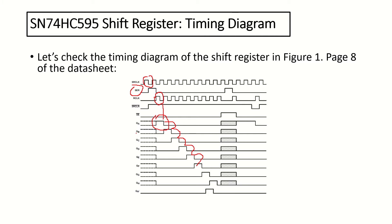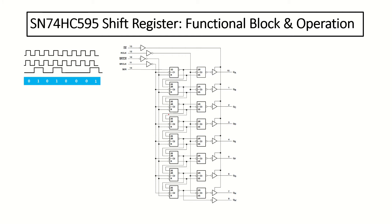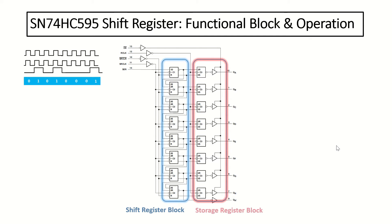Now let's see this in a better way with an animation. This diagram is taken from the data sheet of the shift register. The blue block is the shift register block and the pink block is the storage register block. In our application, we'd like to enable the output all the time, so we'll directly connect the output enabled active low pin to ground. And since we don't want our shift register to be cleared, we'll connect the SR clear active low pin directly to VCC. Now let's start feeding the shift register with the 8-bit array.